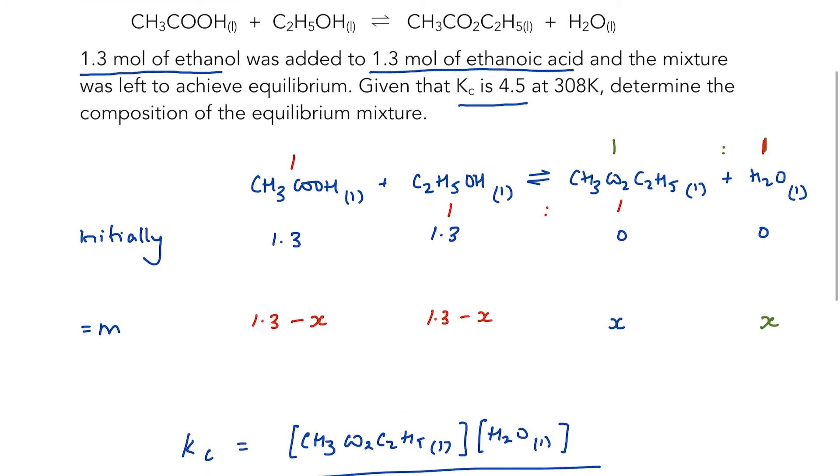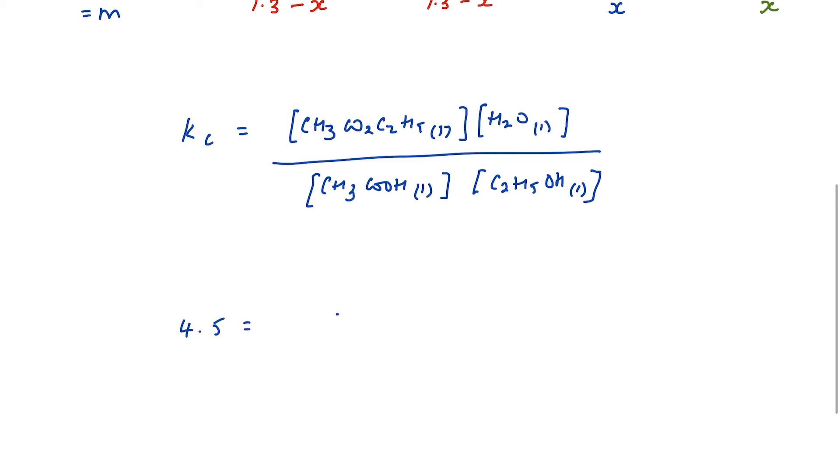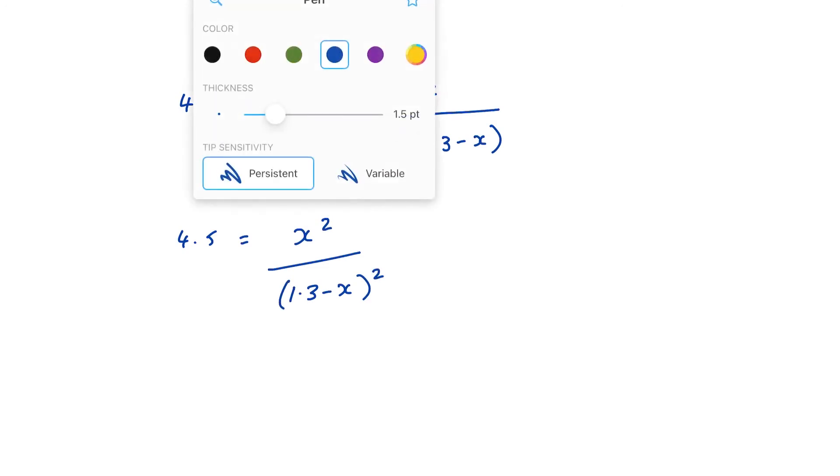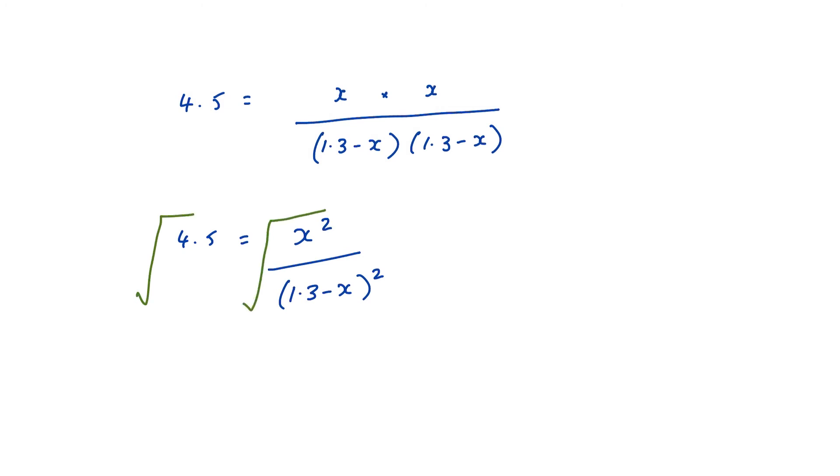Kc we are told was 4.5, so 4.5 is equal to x multiplied by x divided by 1.3 minus x times 1.3 minus x. Okay, this is the bit where you should not get scared. We can simplify this out quite easily. 4.5 is equal to x squared over 1.3 minus x squared. If I then take the square root of each of these, that becomes when I plug it into my calculator square root of 4.5 is 2.12 is equal to x over 1.3 minus x.